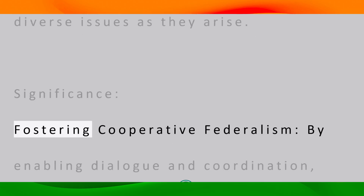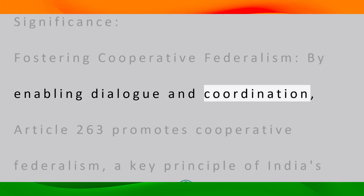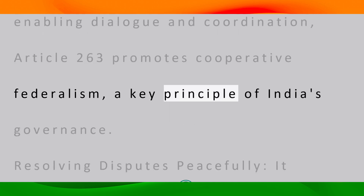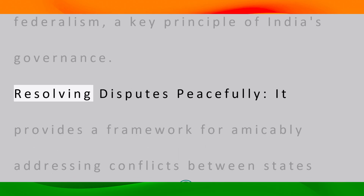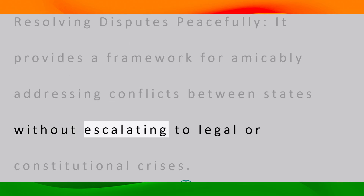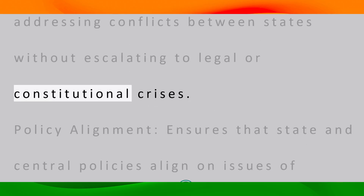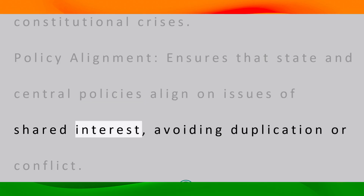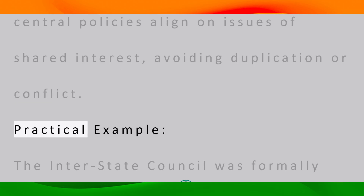By enabling dialogue and coordination, Article 263 promotes cooperative federalism, a key principle of India's governance. It provides a framework for amicably resolving disputes between states without escalating to legal or constitutional crises, and ensures that state and central policies align on issues of shared interest, avoiding duplication or conflict.